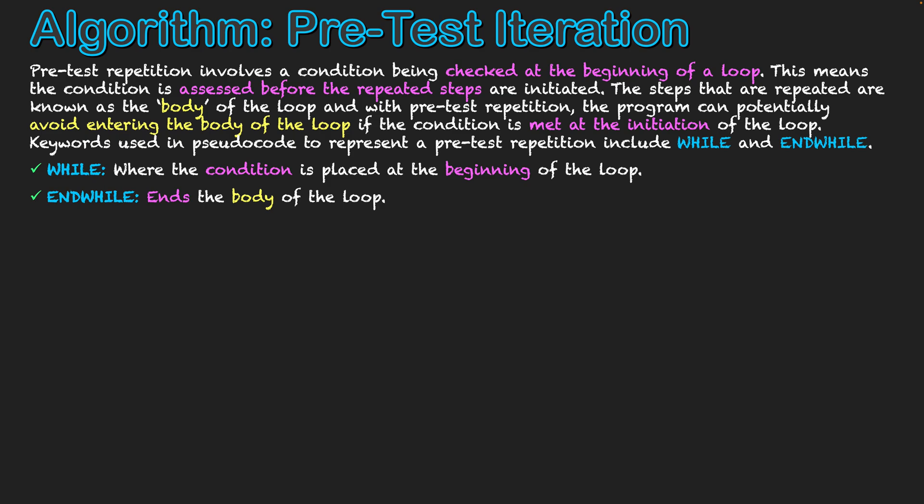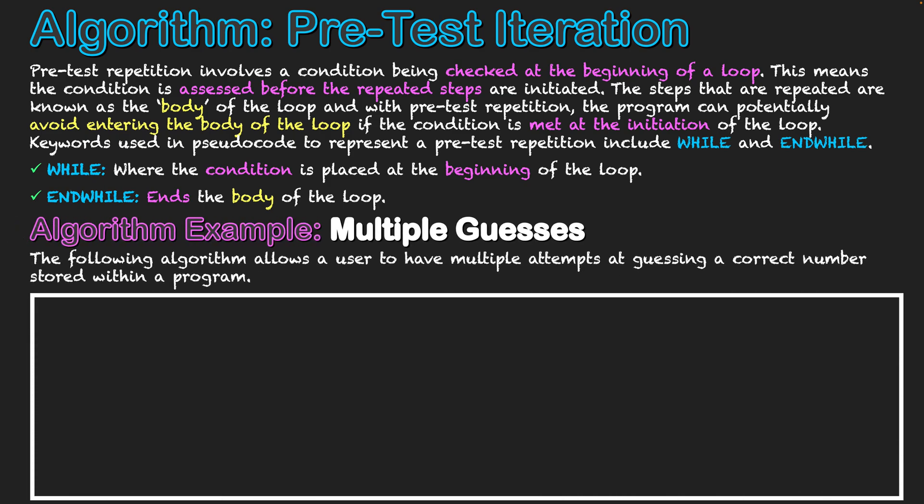What we're going to do now is look at an example, and this example is for a multiple guessing game. The following algorithm allows a user to have multiple attempts at guessing a correct number stored within a program. So the program's going to think of a number like two, and the user's got to guess what the number is. The program starts off with our BEGIN statement, and we're beginning our program known as Multiple Guesses.